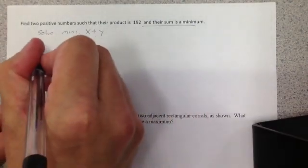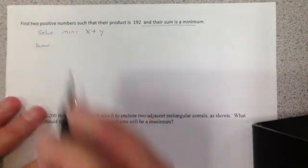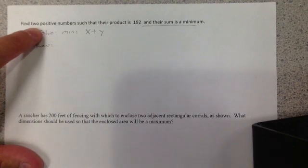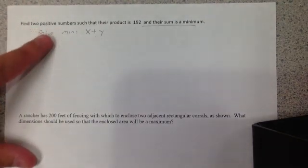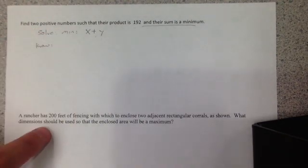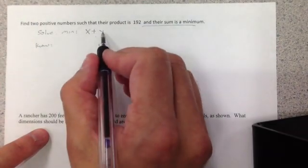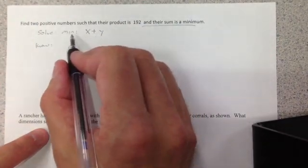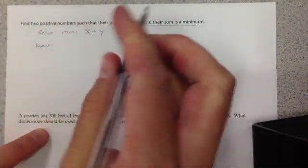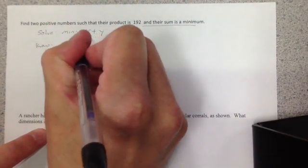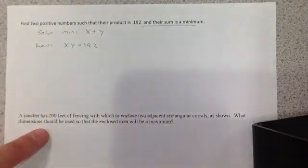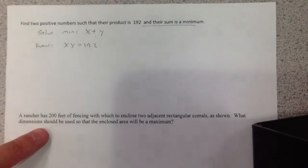I take a look at something I already know. They tell me I have two positive numbers such that their product is 192. So if I add them, x plus y, I get some sort of number here. It's going to be the smallest number possible. But when I multiply them together, I get 192.